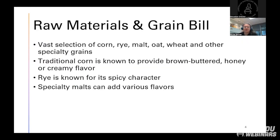Looking at raw materials and the grain bill: everyone in this industry knows there's a variety of raw materials you can use. Bourbon, for example, has to be 51% corn, but then you're open to what you want to use for the rest — usually rye and malt, but plenty of bourbons also have oat or wheat. The different percentages of those can vastly affect the final flavor.